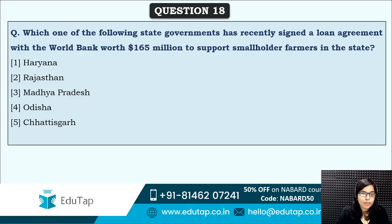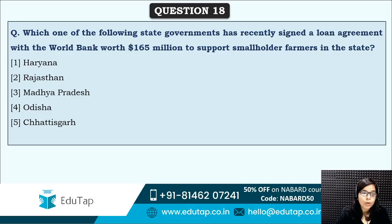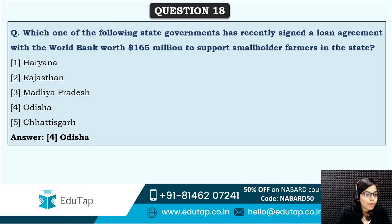Next: which of the following state governments has recently signed a loan agreement with the World Bank worth $165 million to support smallholder farmers? ADB contributed to rural roads in Maharashtra; now World Bank has given $165 million to support smallholder farmers. The correct answer is option four — Odisha. World Bank has signed a loan agreement of $165 million with Odisha to support smallholder farmers.